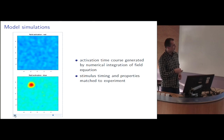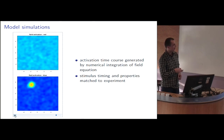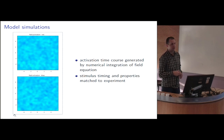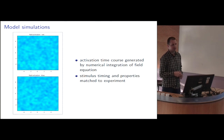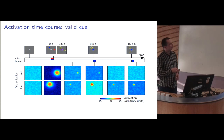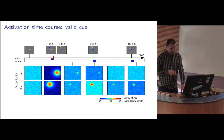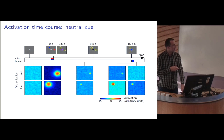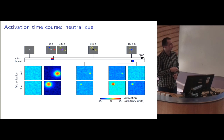Finally, at the time of the response, the field with the target item is cued again, and the position response can be read out from the field as the center of mass of the remaining activation peak. This shows the model activation in snapshots over the time course for a trial with a retro cue given after half the delay period, and for a trial without a retro cue, where both locations are maintained over the whole delay period and only at the end one is cued and the other suppressed.